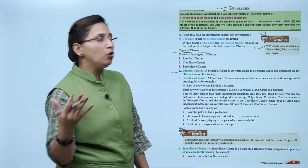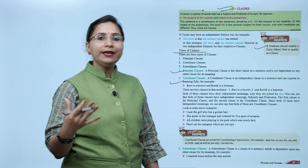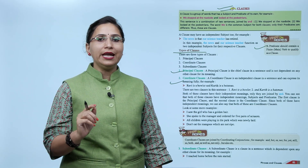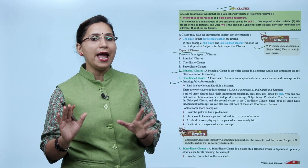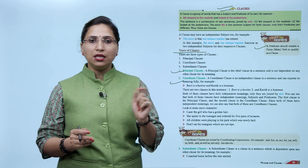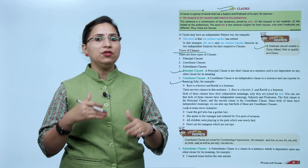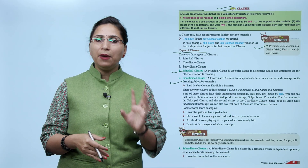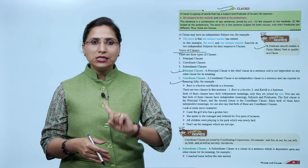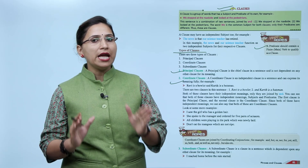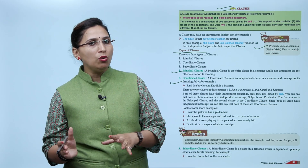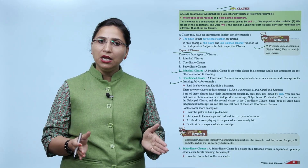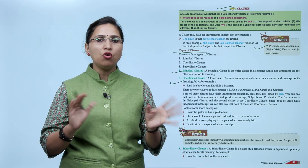Second is coordinate clause. A coordinate clause is an independent clause in a sentence and can express its meaning fully. For example: 'Ravi is a bowler and Karthik is a batsman.' There are two clauses in this sentence and both have independent meaning, subjects, and predicates. The first clause is the principal clause and the second clause is the coordinate clause. Since both have independent meaning, we can also say that both are coordinate clauses.